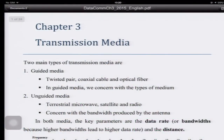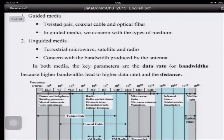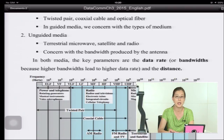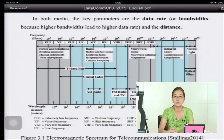There are two main types of transmission media: guided media and unguided media. The guided media are twisted pair, coaxial cable, and optical fiber. In guided media, we are concerned with the type of the medium, since different kinds of medium give different characteristics and properties. The unguided media is usually air, using techniques such as terrestrial microwave, satellite microwave, or radio.